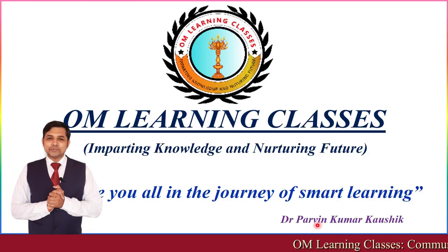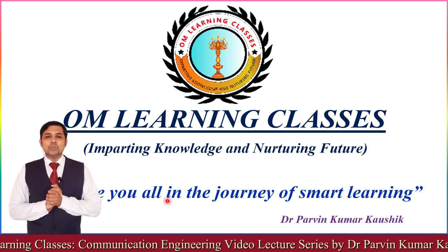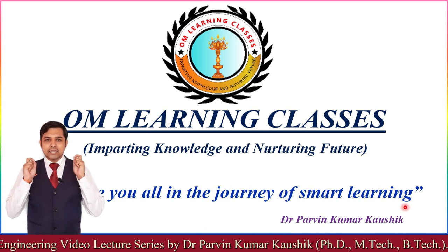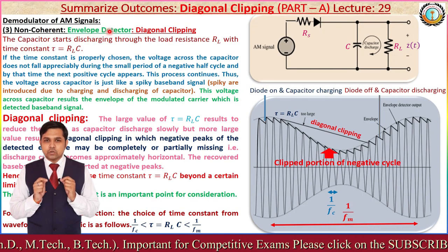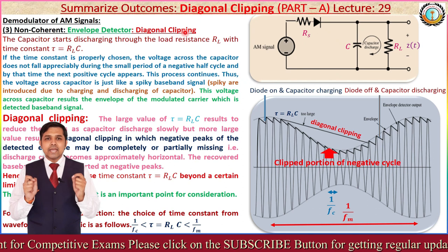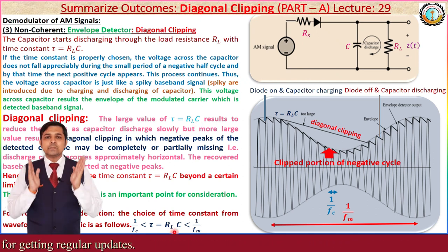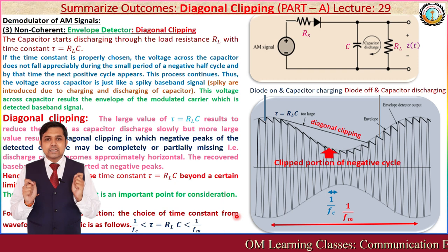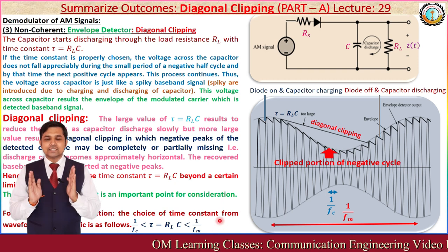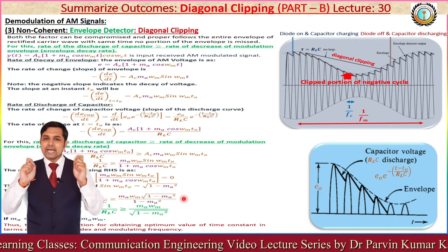Hi, this is Dr. Praveen Kumar Kaushik and I welcome you all in OM Learning Classes. As per envelope detector, we have two types of distortion: one is diagonal clipping and another one is negative peak clipping. As per the previous lecture, we already completed diagonal clipping and we resulted with two possible conditions to avoid diagonal clipping.